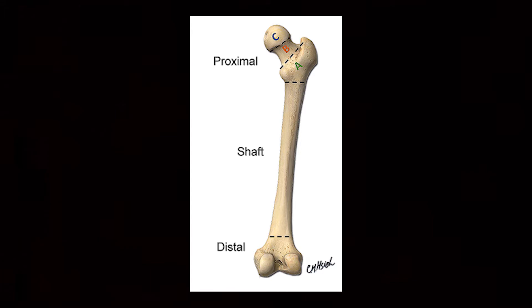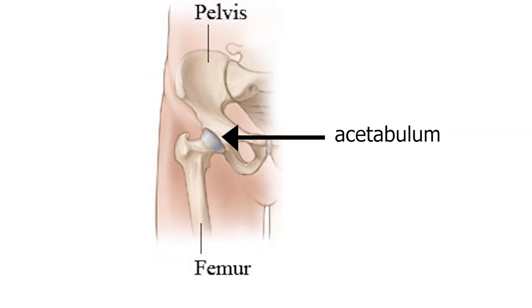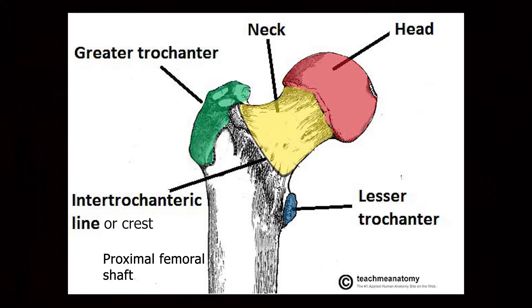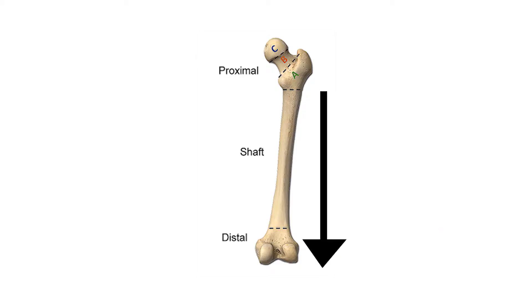It begins from the femoral head, which fits into the acetabulum. Below the femoral head is the femoral neck. The femoral neck continues from the femoral head to the trochanteric crest, which is a ridge occurring between the greater trochanter and the lesser trochanter. The trochanteric crest then continues down as the proximal femoral shaft toward the knee joint.